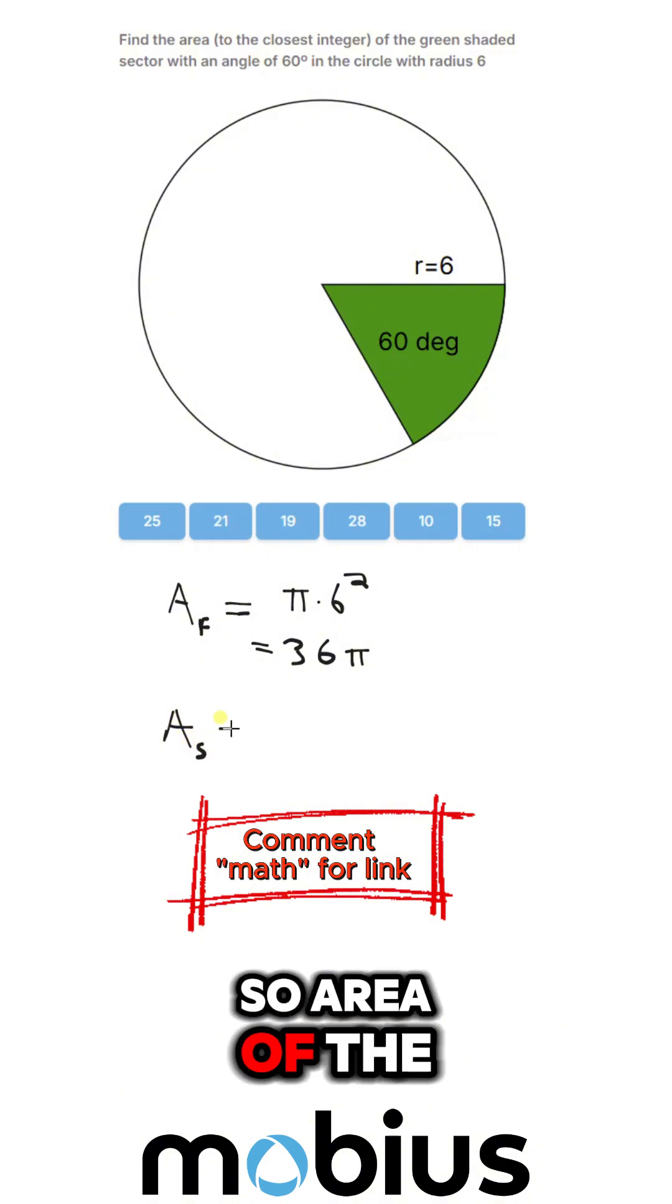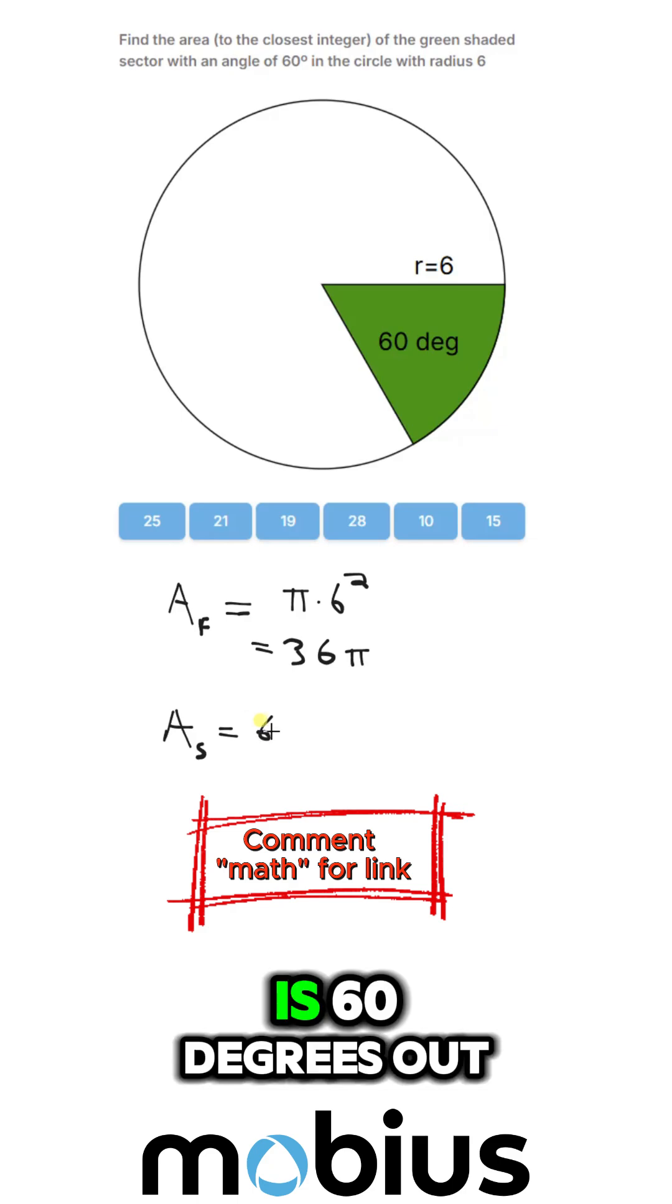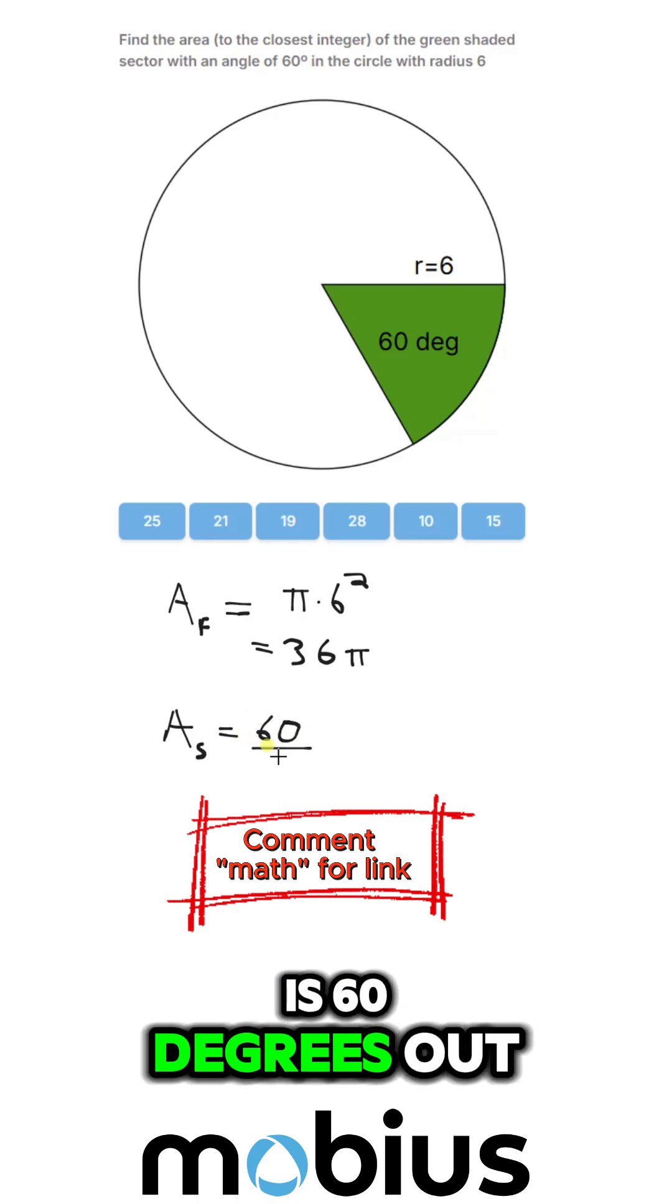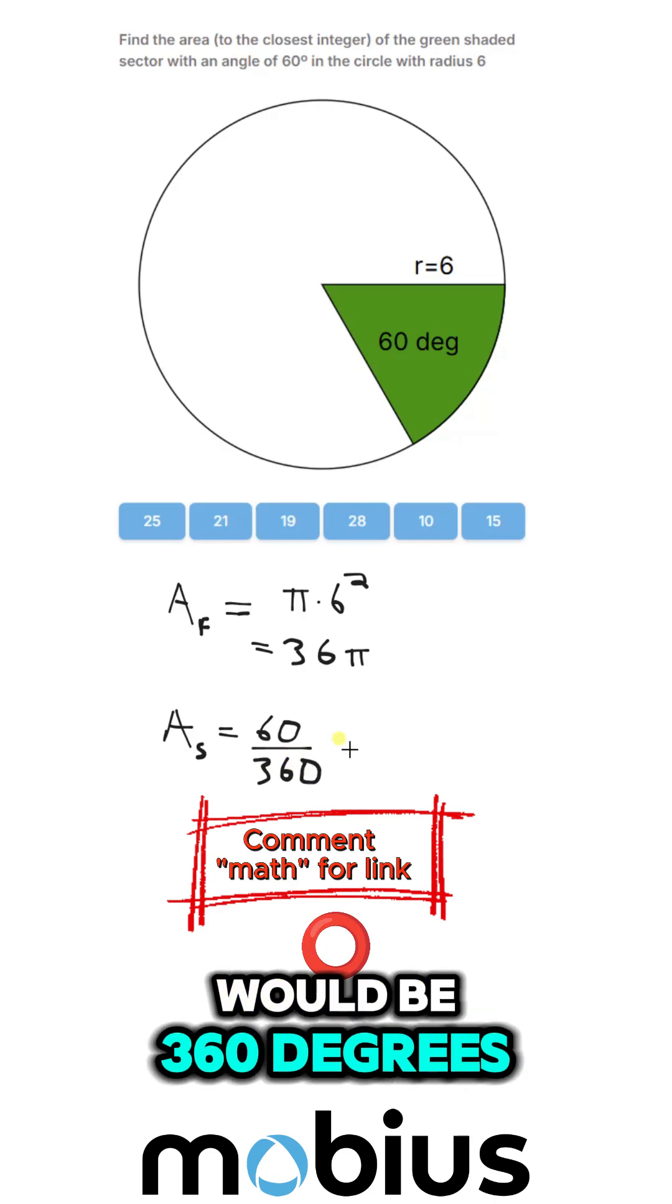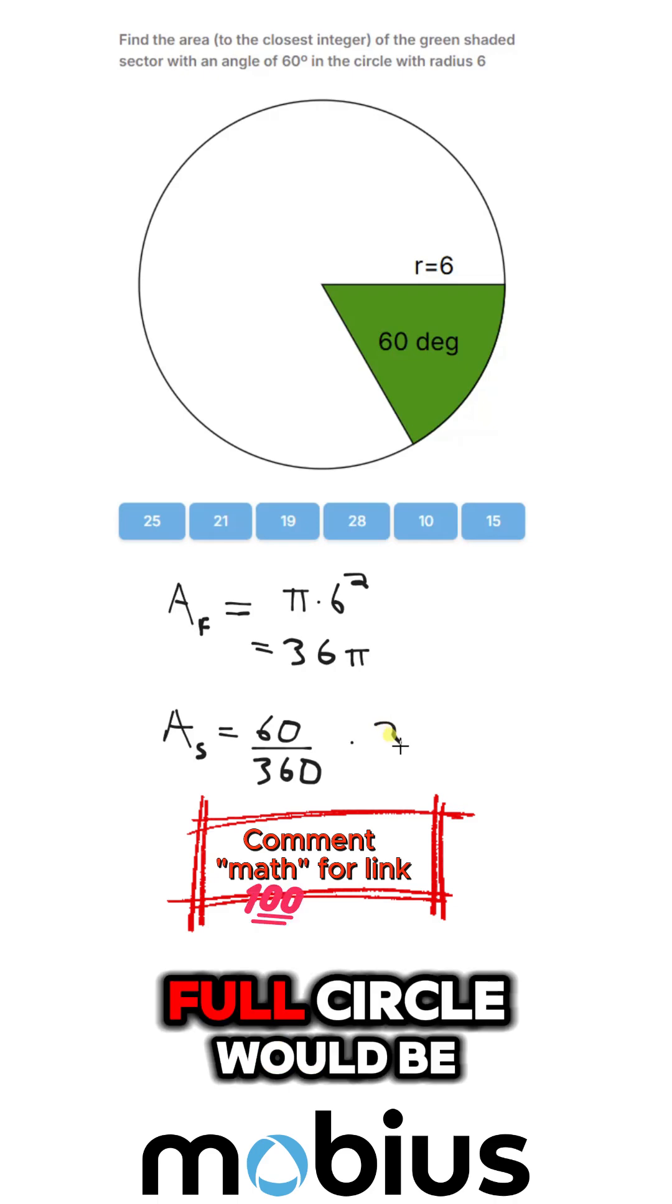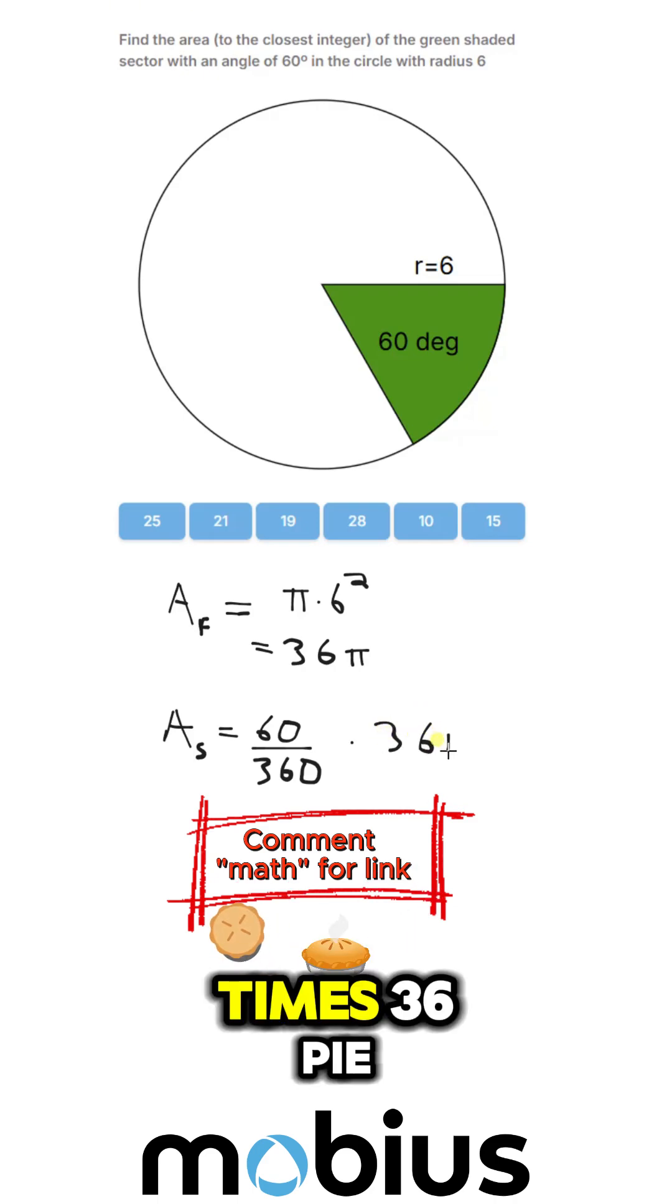So area of the shaded section is 60 degrees out of a full circle, and a full circle would be 360 degrees, times what the area of the full circle would be, times 36π.